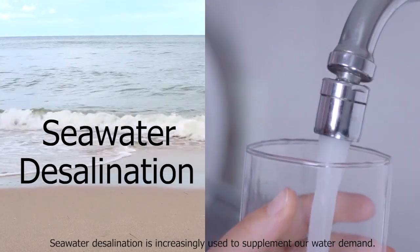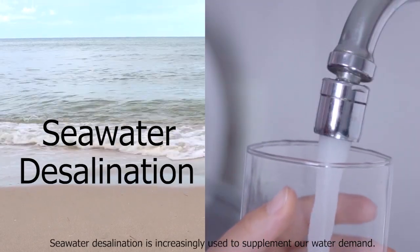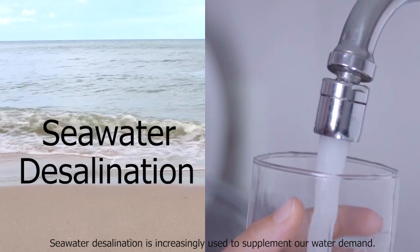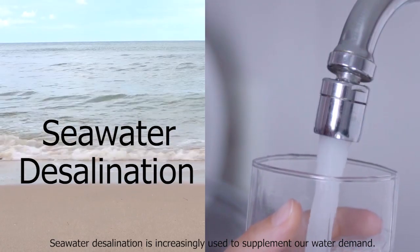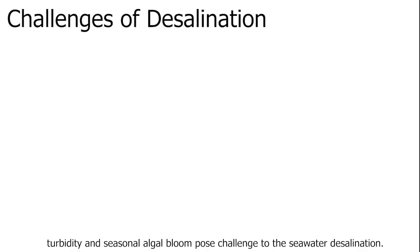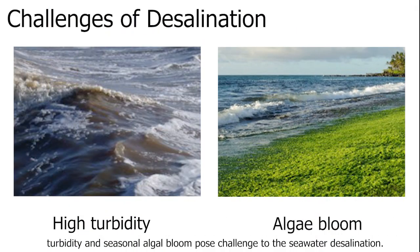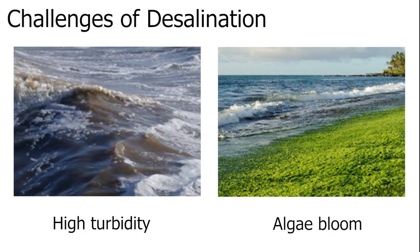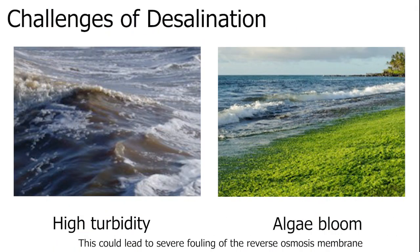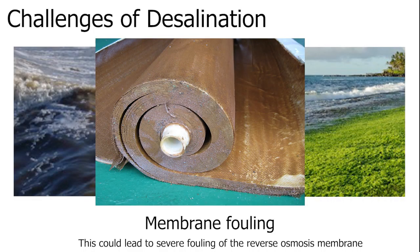Seawater desalination is increasingly used to supplement our water demand. Fluctuating seawater quality, such as sudden increases in turbidity and seasonal algal blooms, pose challenges to seawater desalination. This could lead to severe fouling of the reverse osmosis membrane.